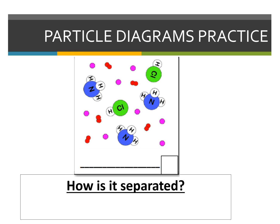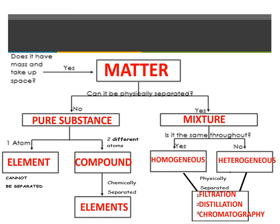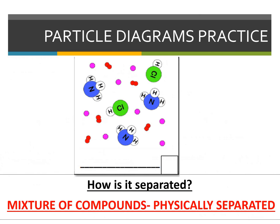This next diagram shows pink particles by themselves — that's going to be one type of element. We see two red particles together, but remember they're the same particle, so that's also going to be considered an element. We have HCl chemically combined because they're touching, and we have N and H chemically combined because they're touching. So my pink particles are elements, my red particles are elements, my N and H are a compound, and HCl is a compound. Since I can clearly see the difference between all of these — elements and compounds — this is going to be a mixture of elements and compounds. Since I can see the difference, it's heterogeneous, and heterogeneous mixtures can be physically separated.